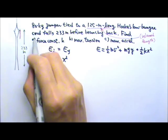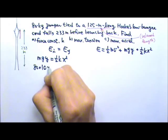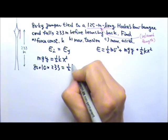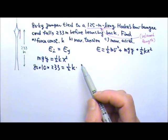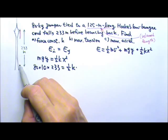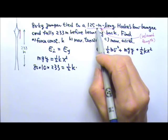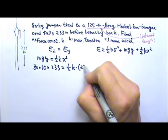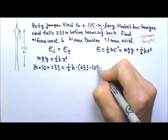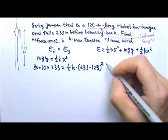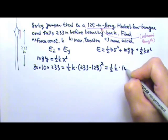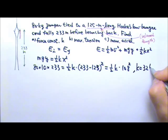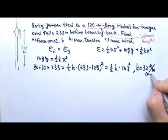Plugging in the numbers: mass is 80 kg, g is 10, height at the beginning is 233 m. That equals ½K times the stretched amount. The stretched amount is not 233 m, because the cord has an original length of 125 m, so the cord only stretches by 233 minus 125 = 108 m. Setting these equal, we find the spring constant K to be 32 N/m. That's our answer for part A.